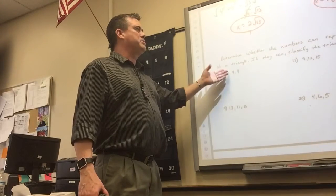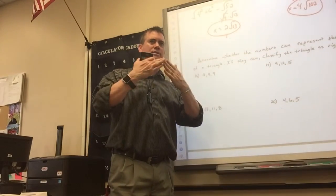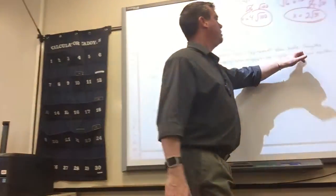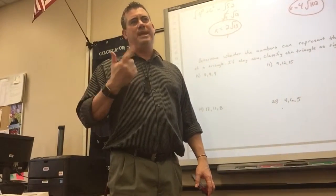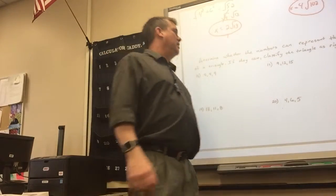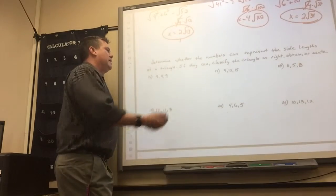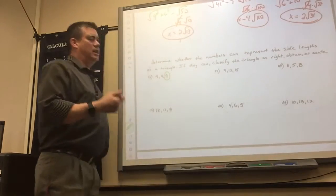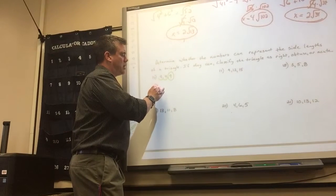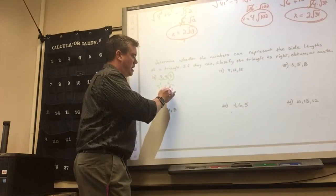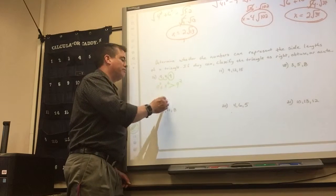For these problems, determine whether the side lengths can represent a triangle. Remember: any two sides have to add up to more than the third side. If they do form a triangle, then say whether it's right, obtuse, or acute — you need to memorize that for the test. Problem 16: 9 and 4 is more than 9; 9 and 9 is more than 4 — so this forms a triangle. Choose the longest side as the hypotenuse. Since a squared plus b squared is greater than c squared, it is acute.